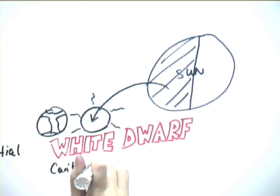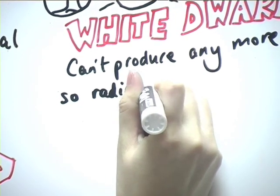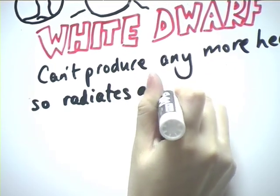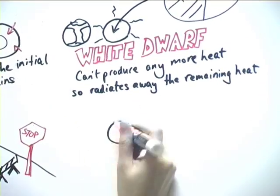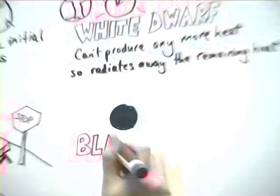As it can't produce any more heat, it radiates away the remaining heat for billions of years. Once the heat has all gone, it sits as a cold, dark mass called a black dwarf.